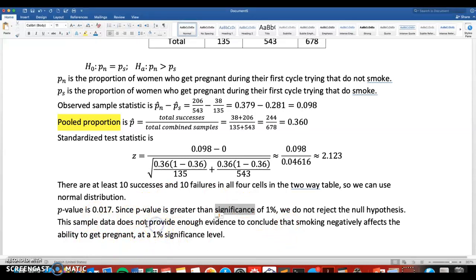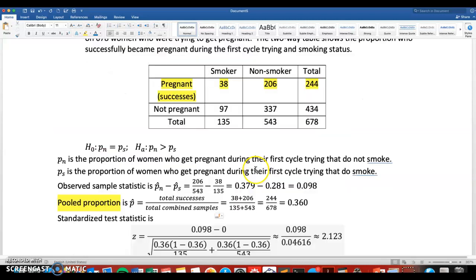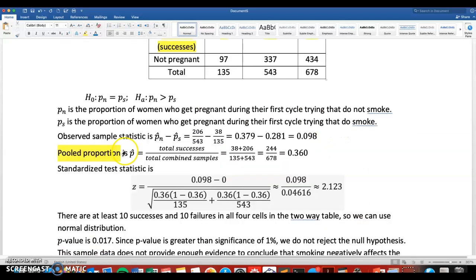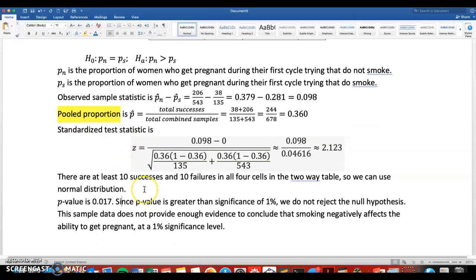And you might think that can't be right. We know smoking does negatively affect the ability to get pregnant, along with a plethora of other pregnancy issues. But this is at 1% significance. We did not get quite enough evidence. I'd say close, but not enough. Probably need to get some more samples, some more information.